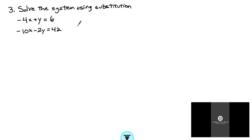Number three, solve the system using substitution. We're given the equations negative 4x plus y equals 6 and negative 10x minus 2y equals 42.